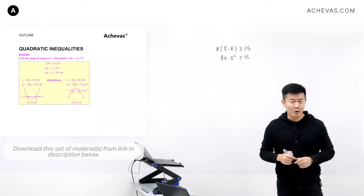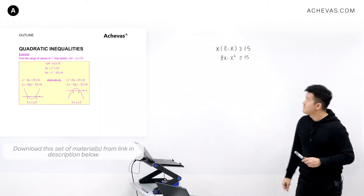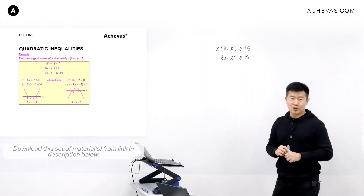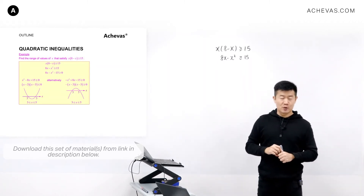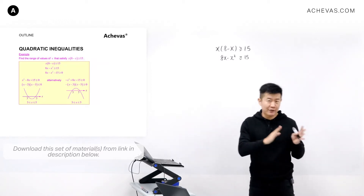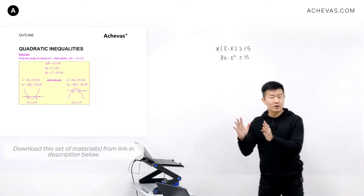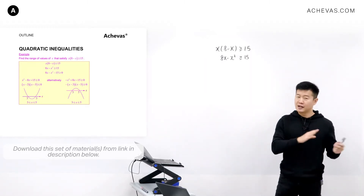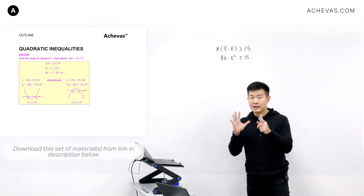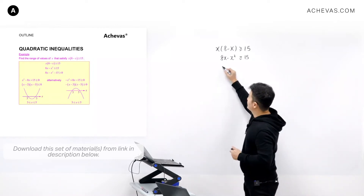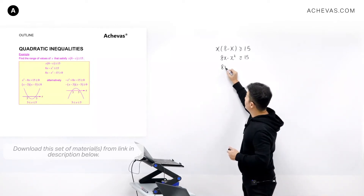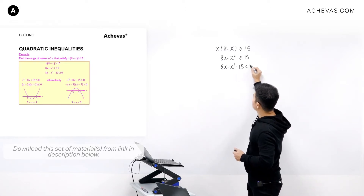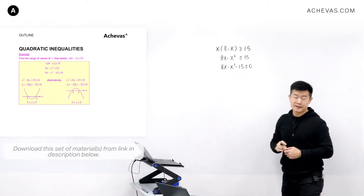So how do we solve for a quadratic inequality? The first thing we want to do is to make sure that one side of the inequality is equal to 0. To achieve this, I can either shift everything over to the left-hand side or to the right-hand side. Let's shift everything to the left: 8x minus x squared minus 15 is bigger or equal to 0.